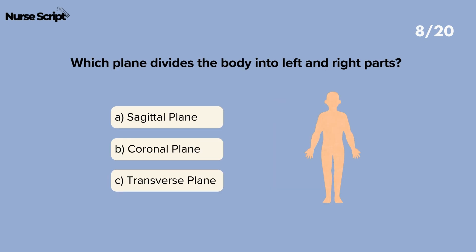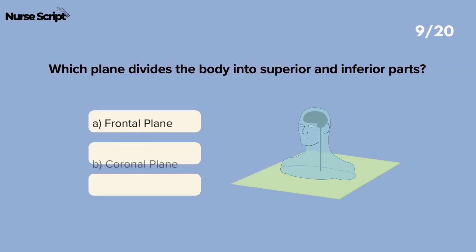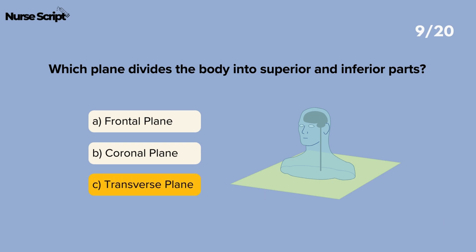Which plane divides the body into left and right parts? Sagittal plane. Which plane divides the body into superior and inferior parts? Transverse plane.